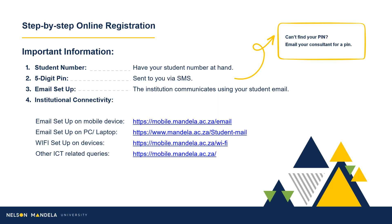In successfully registering, please note the following. Ensure you have your student number and five-digit PIN at hand. The five-digit PIN should have been received by the qualifying student via SMS. The institution's primary medium of communication is email. To ensure your digital connectivity is set up, please make use of the provided links to set up your institutional email on your devices.